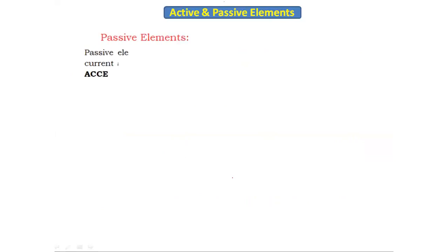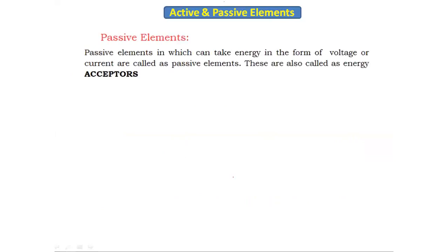Now let's look at passive elements. Passive elements are elements which take energy in the form of voltage or current. They are also called energy acceptors because they take energy. Examples of passive elements include the resistor, inductor, and capacitor.